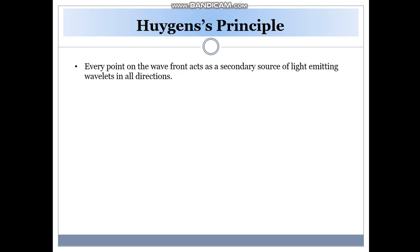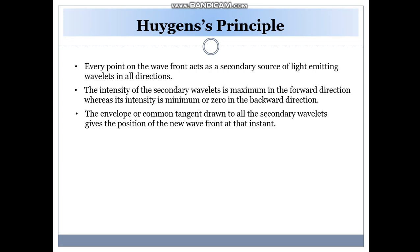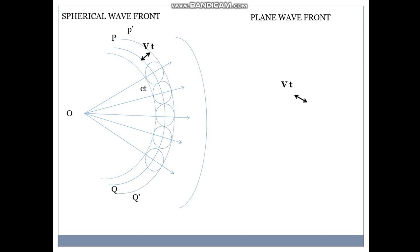Huygens principle. Every point on wave front acts as secondary source of light, emitting wavelengths in all directions. The intensity of the secondary wavelengths is maximum in the forward direction whereas its intensity is minimum or zero in the backward direction. The envelope or the common tangent drawn to all the secondary wavelengths gives the position of the new wave front at that instant. So that's the spherical wave front again. These are the wavelengths, the wavelengths and that's the plane wave front. These are the wavelengths.